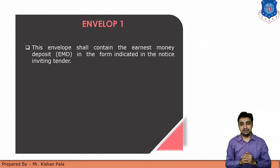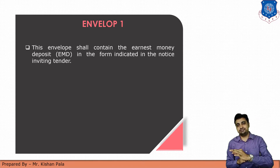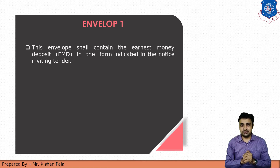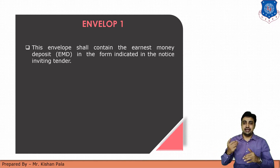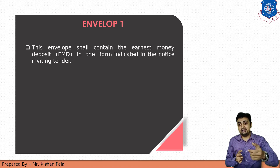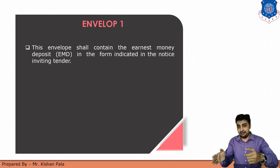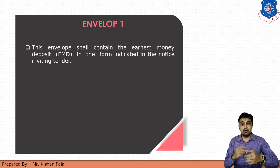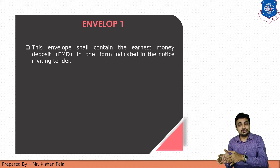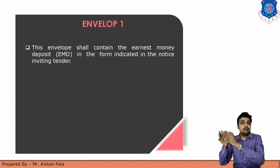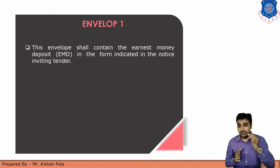Let us start with envelope number one. This envelope shall contain the Earnest Money Deposit (EMD) in the form indicated in the notice inviting tender. The notice inviting tender mentions the EMD value, and the contractor has to fill the particular form with the treasury in the mode of payment which has been mentioned in the notice inviting tender.